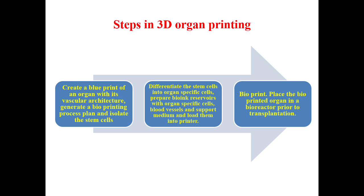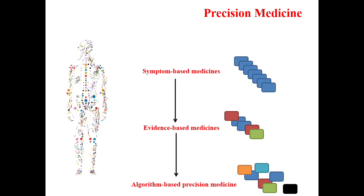The most important and talked-about feature in pharmacy is now precision medicine. There are three types of treatment. Symptom-based medicine: suppose 100 people suffer from fever — the doctor will prescribe Paracetamol to all, with no genetic guideline or genome sequencing, just based on symptom. This is called symptom-based medicine.